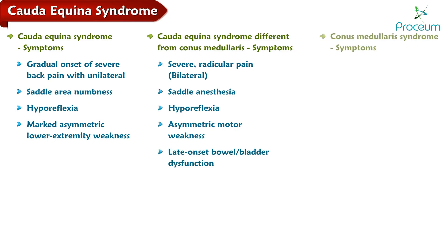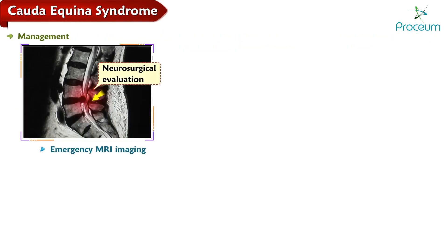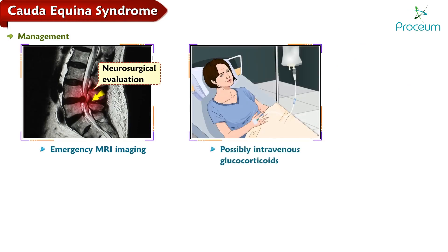Patients with conus medullaris syndrome present with severe low back pain, perianal hypoesthesia, symmetric weakness, and early onset bowel and bladder dysfunction. Management includes emergency MRI, neurosurgical evaluation, and possibly intravenous glucocorticoids.